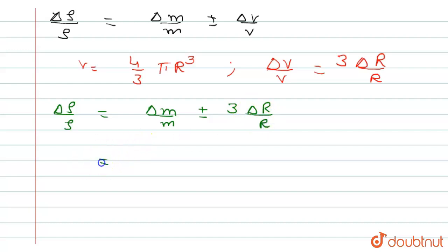Now del m by m is equal to 3 percent, and plus 3 into 2, which is equal to 9. In percentage form this is equal to 0.09. This is the final answer.